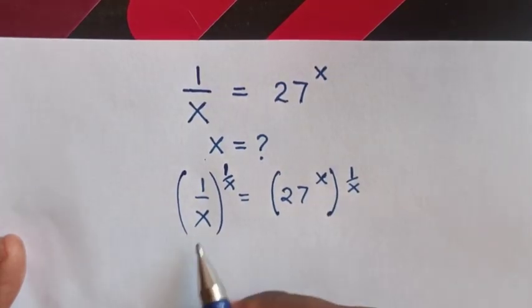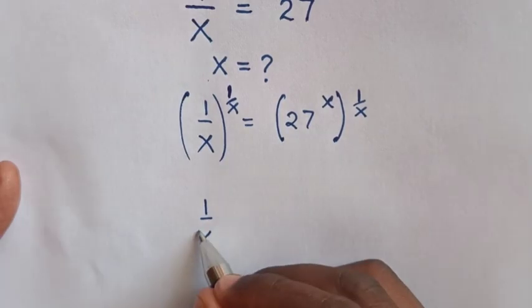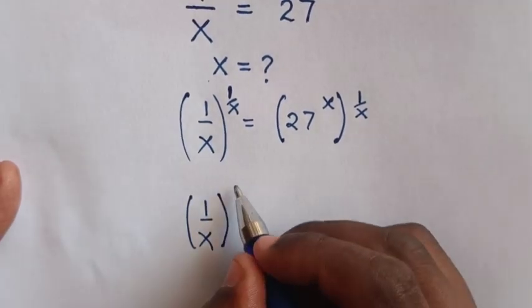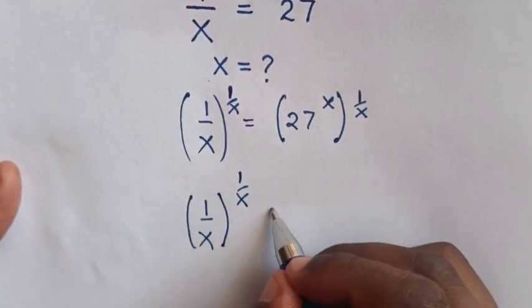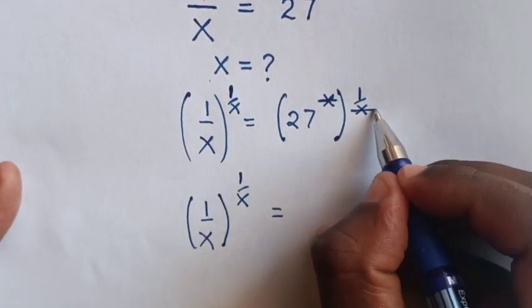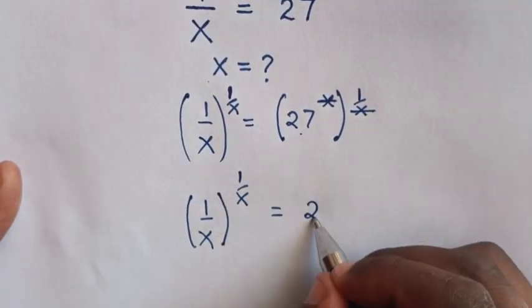So our equation becomes 1 over x to the power of 1 over x equals 27 to the power of x times 1 over x. The powers of x cancel each other, leaving us with 27.